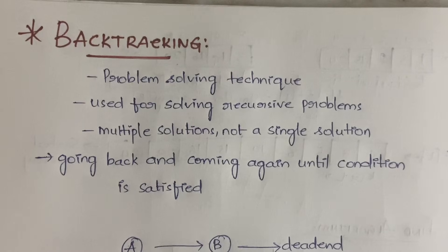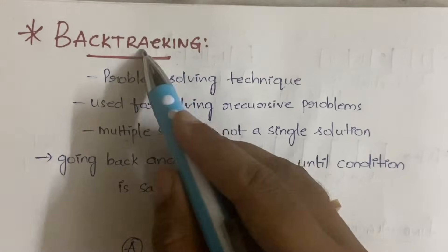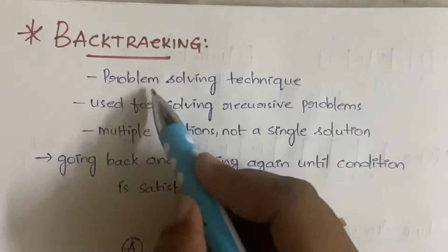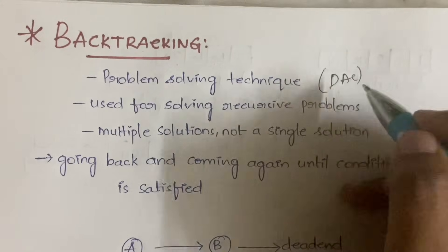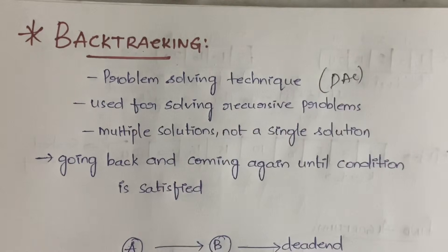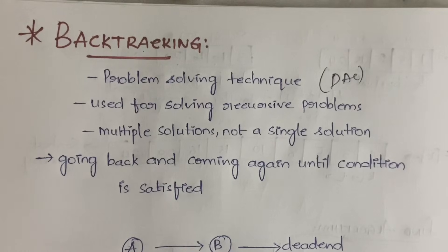From the next coming videos onwards we will be learning about the applications of backtracking. So first, what is backtracking? It is a problem solving technique — like divide and conquer, greedy method, dynamic programming, branch and bound — all of these are different problem solving methods in algorithms.